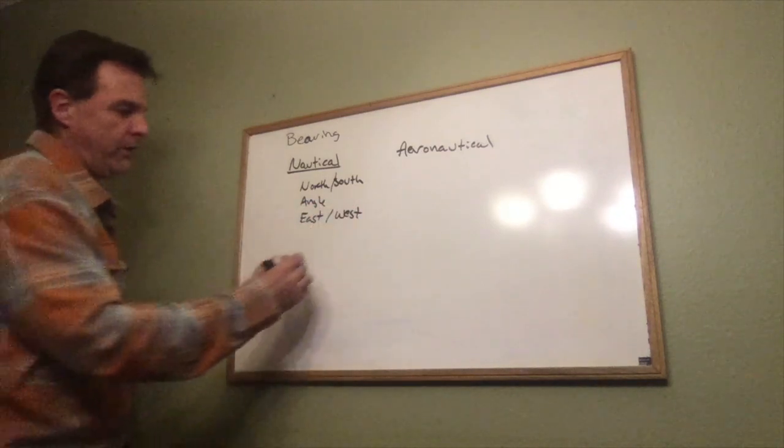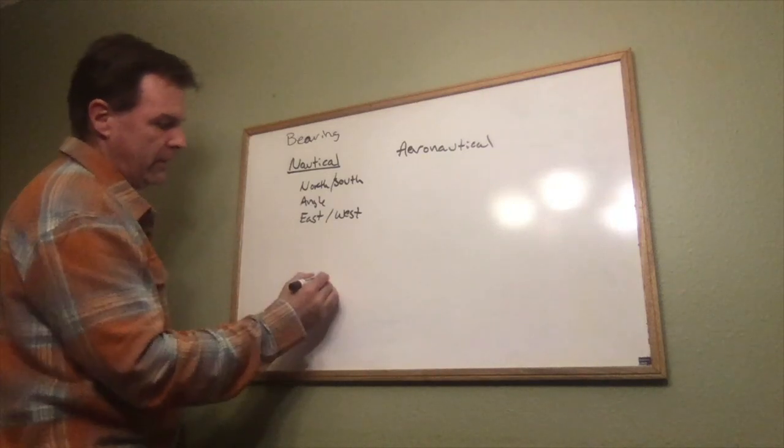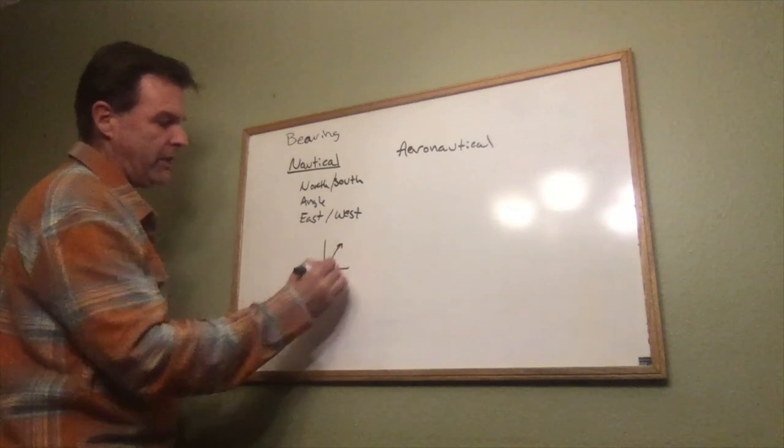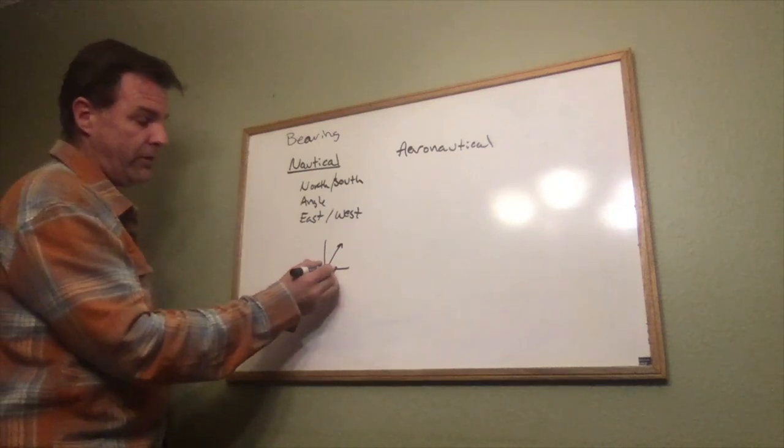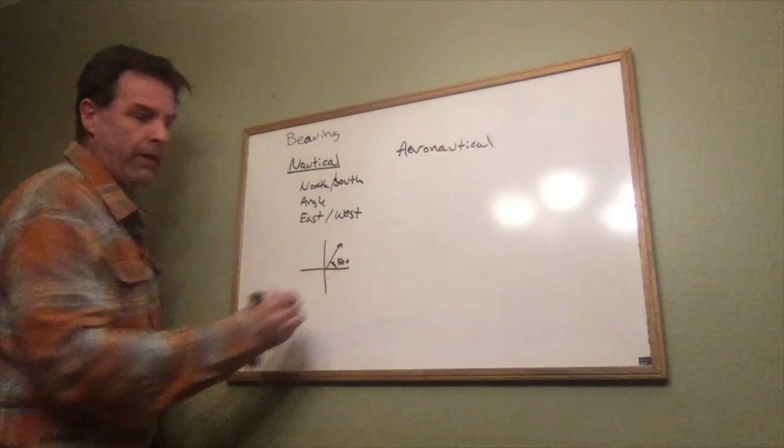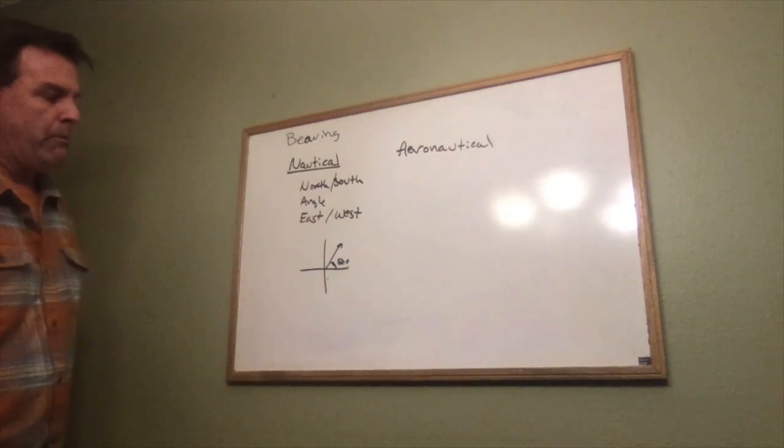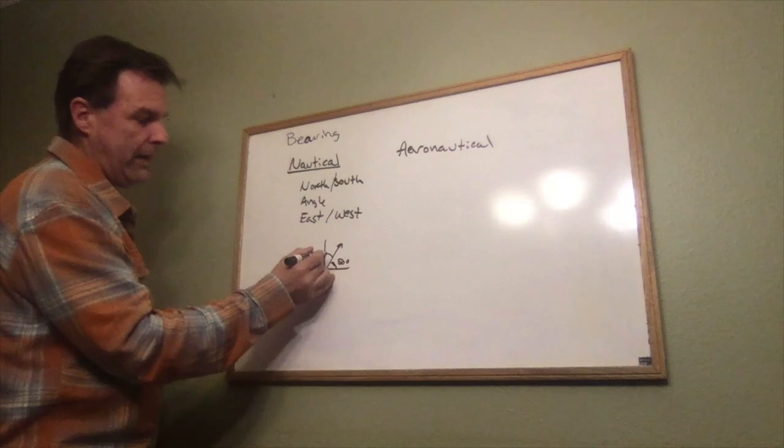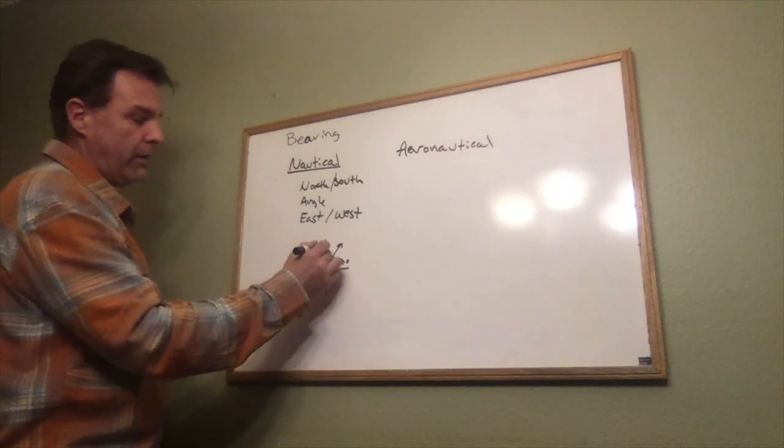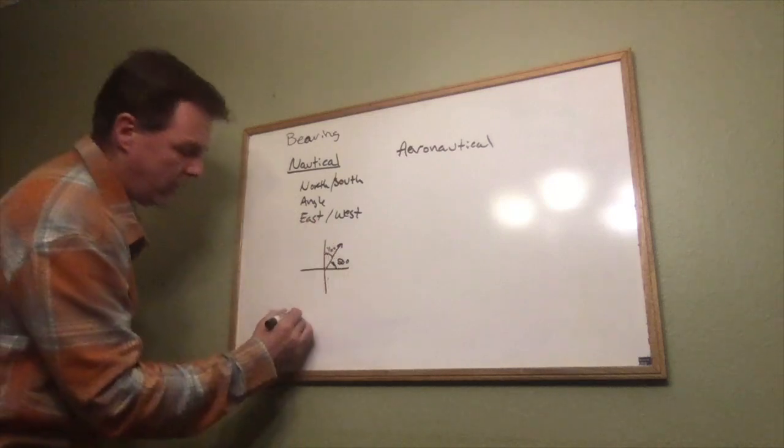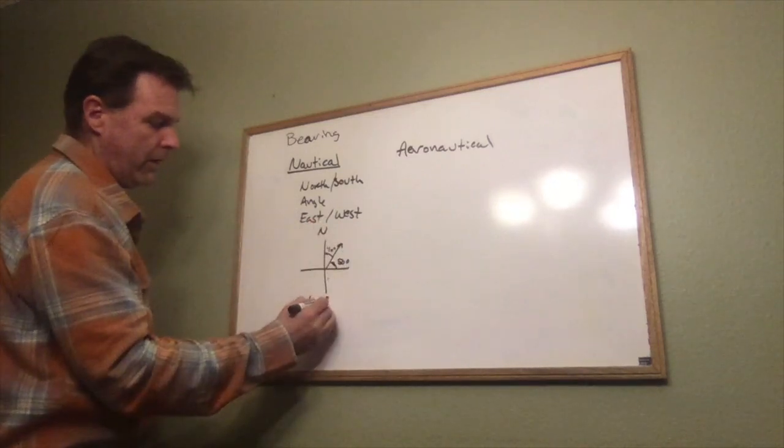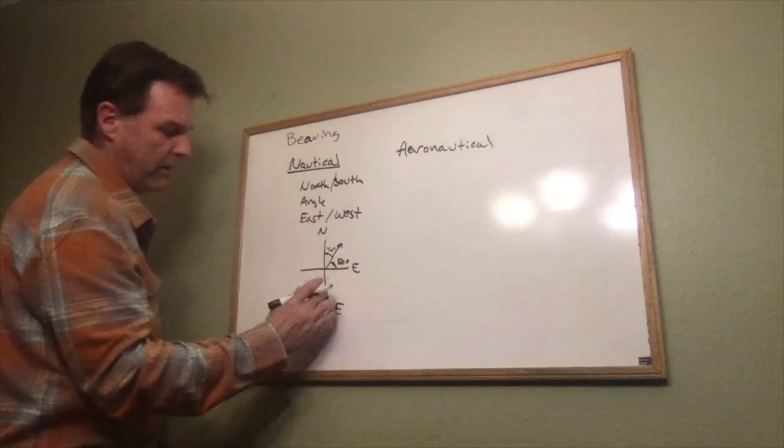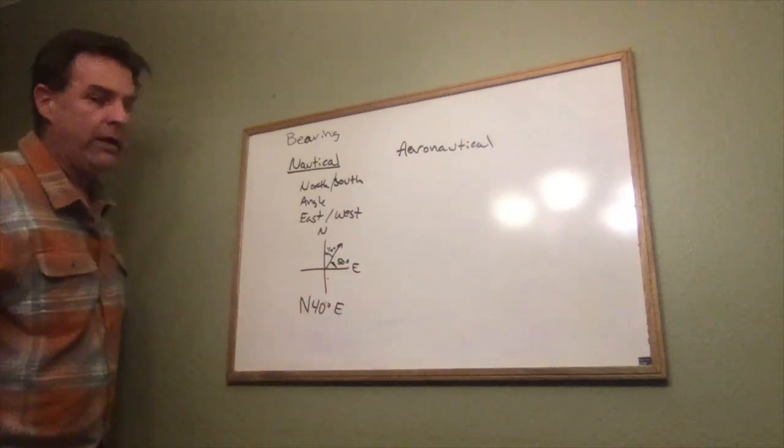So we might say that a boat traveling this direction—if a boat was traveling this direction, and we describe it in an angle in standard position, say this was 50 degrees—what we would say in nautical terms is we would find this angle right here relative to the north. This is 40 degrees, and we would say this boat is traveling north, then 40 degrees, and then the direction off of north, which in this case is east. We'd say this boat is traveling north 40 degrees east.